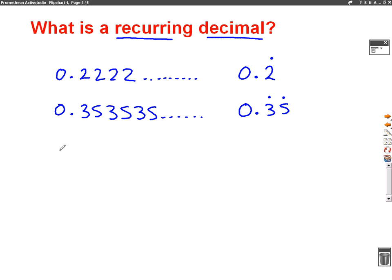There's one more I want to show you. So if we had something like 0.477777, so the 7 keeps going, then that's also a recurring decimal. And the way we'd write that one is 0.47, and we'd put a dot above the 7 only, because it's only the 7 that's recurring there.